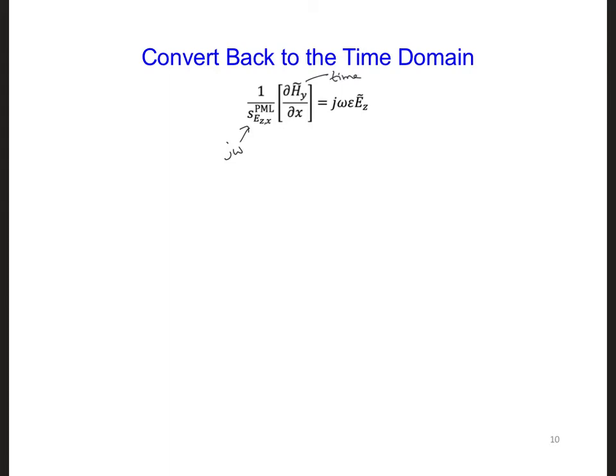So this means we end up with a convolution of the inverse Fourier transform of the 1 over s epsilon z x PML, and a convolution of that with d hy d x.